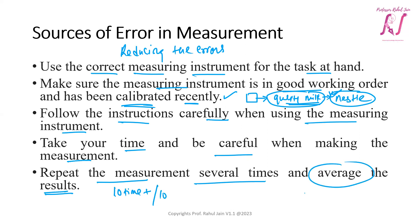For instance, if you are measuring blood sugar, you can test first, second, and third time using the machine, then add the three results and divide by 3 to get the average. This average can be taken as the final quantity to reduce the error in measurement.